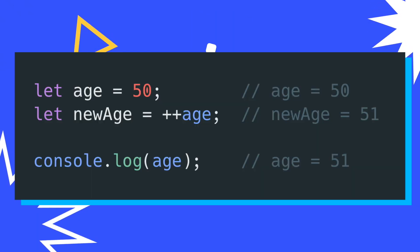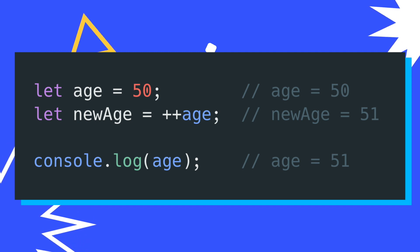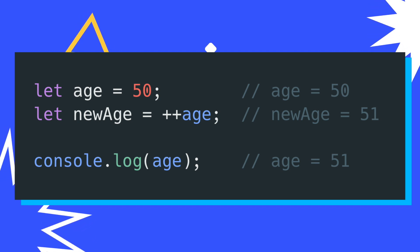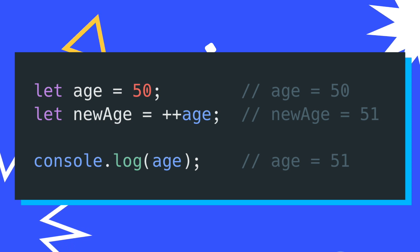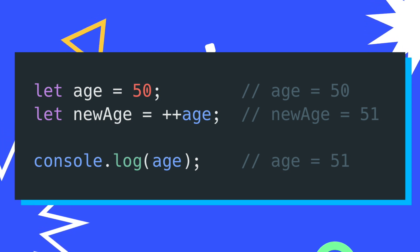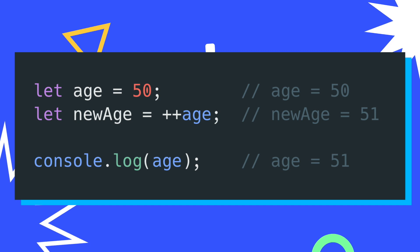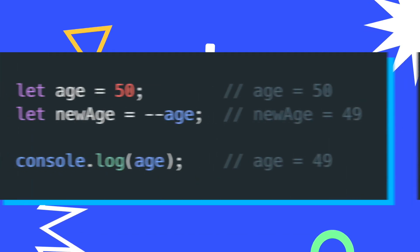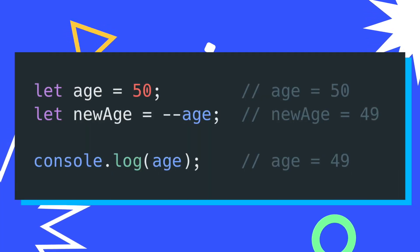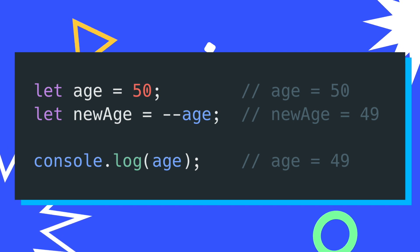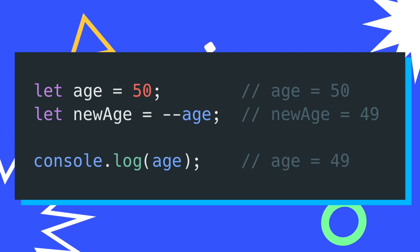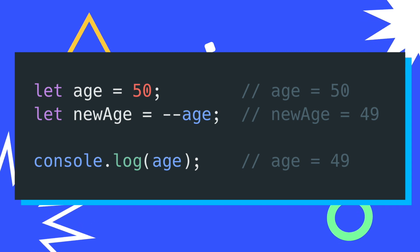Now in this code block, I'm prepending my increment operator. This is going to change the value of age before it gets assigned to new age, so new age is going to have the incremented value of 51. Again, you can see the same behavior for the decrement operator, where I have my decrement operator prepended to age, so new age has the value of 49. Through these examples, you can see that you have control of when you can either increment or decrement your variables.